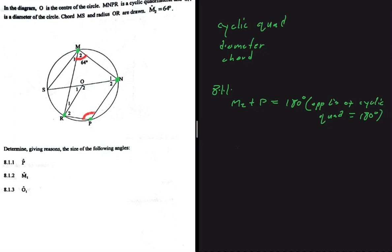And then what is the size of M2? M2 is 64 degrees, and then plus P, which we're looking for, being equal to 180 degrees. So now it should be easy to see here that P is equal to 116 degrees.